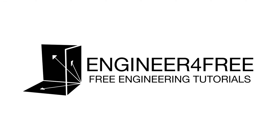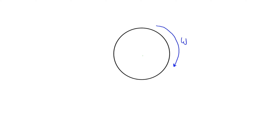Welcome back. In this video we're going to talk about how to calculate tangential velocity and acceleration for circular motion problems. Let's start with a circle and imagine this is some kind of disk that is rotating. It's going to have an angular velocity, which is the rate of change of angular displacement represented by degrees or radians rotated through. If we pick a point on the outside of the disk and follow its path as it rotates about the center, we call that the arc length, or l.